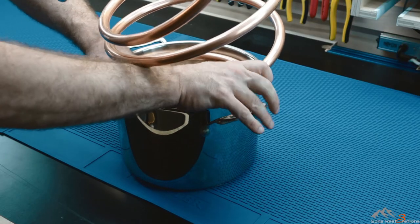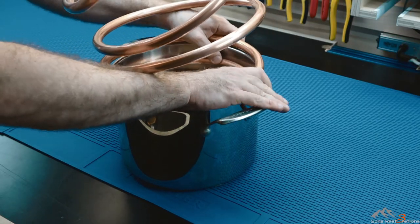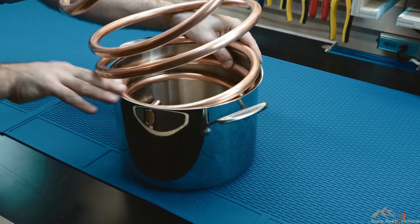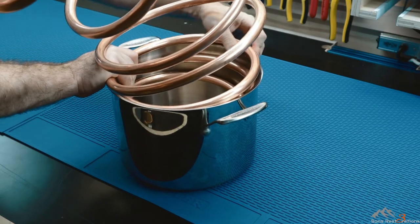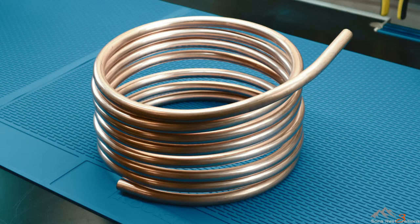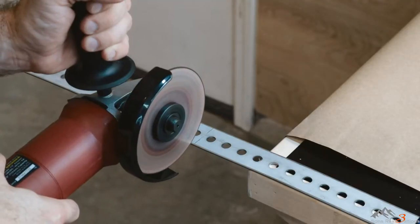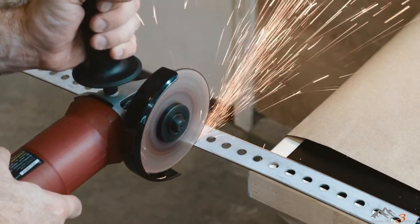To assemble the air dryer, the first step I took was to bend the 20 foot length of copper tubing coil into a size that would fit inside the five gallon bucket. I used one of my wife's pots to do this, but you could use any cylinder shape to wrap your coil.